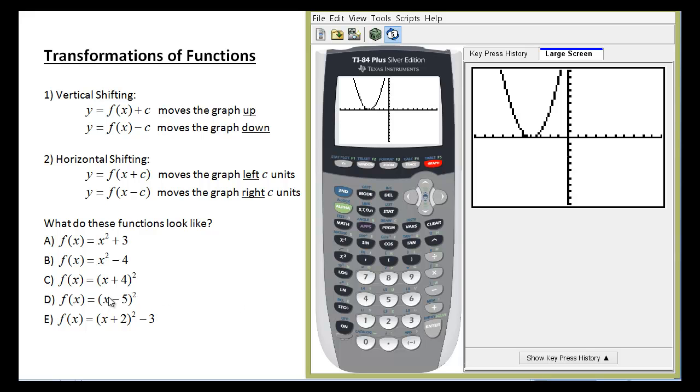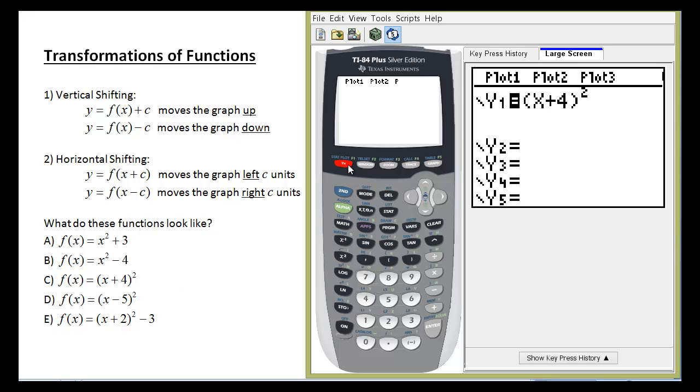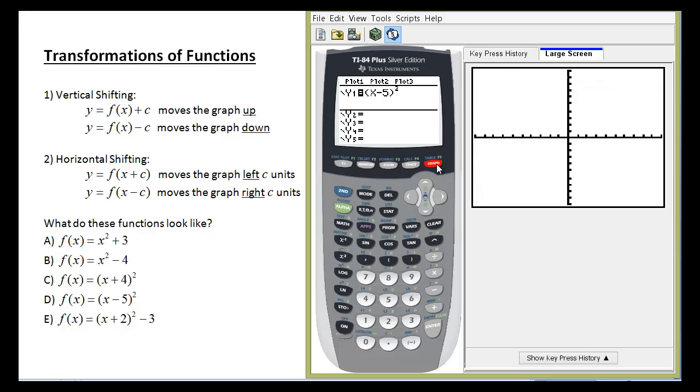So look at problem D here. I've got x minus 5 inside the parentheses, quantity squared. Which direction do you think horizontally that's going to shift it? Let's go try it out. So I'm punching minus 5 here in my calculator. And you might think that it moves it five places to the left. Nope. It moves it five places to the right.